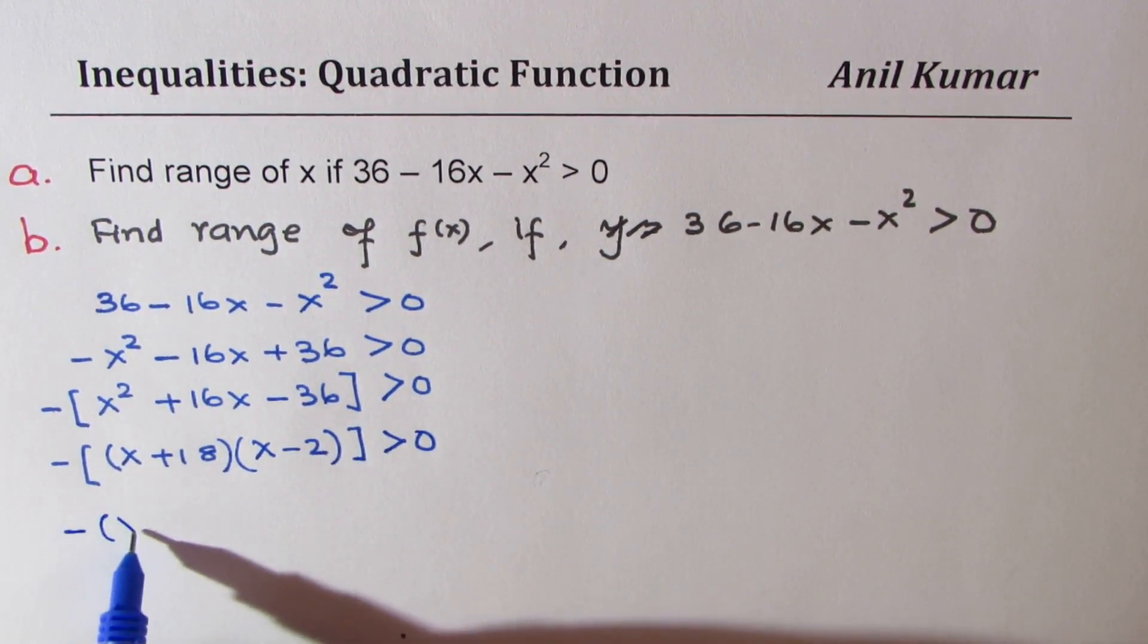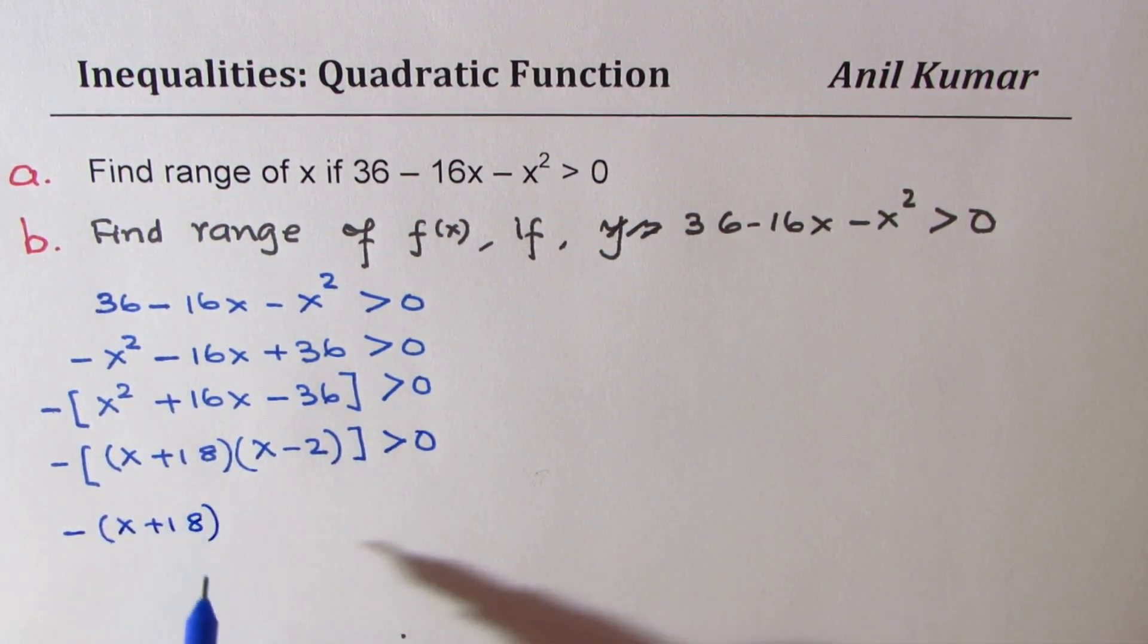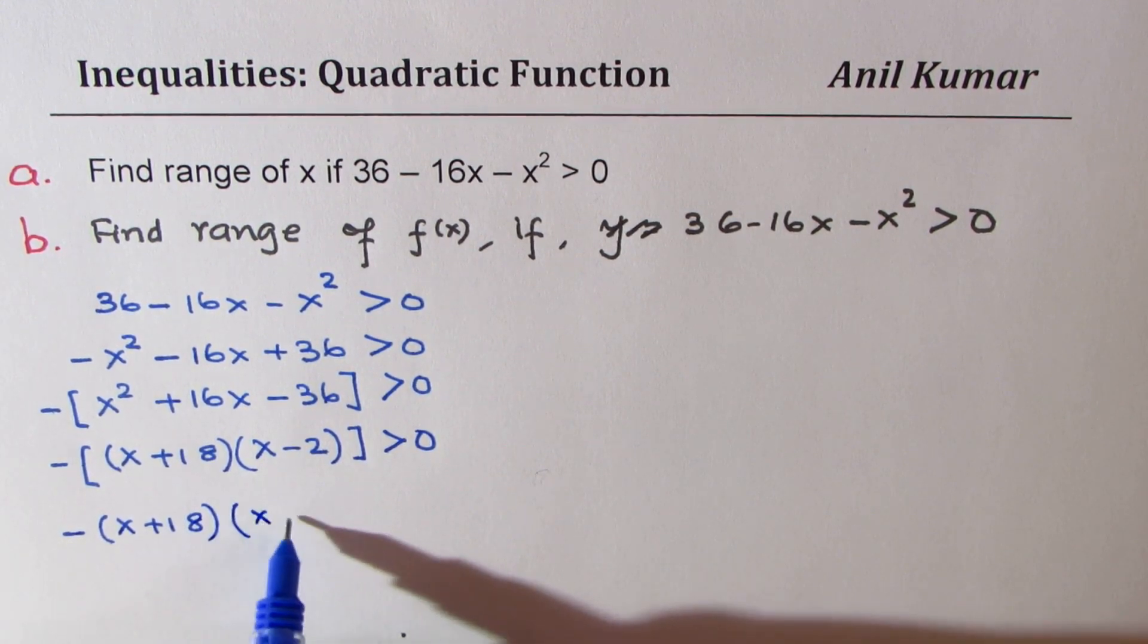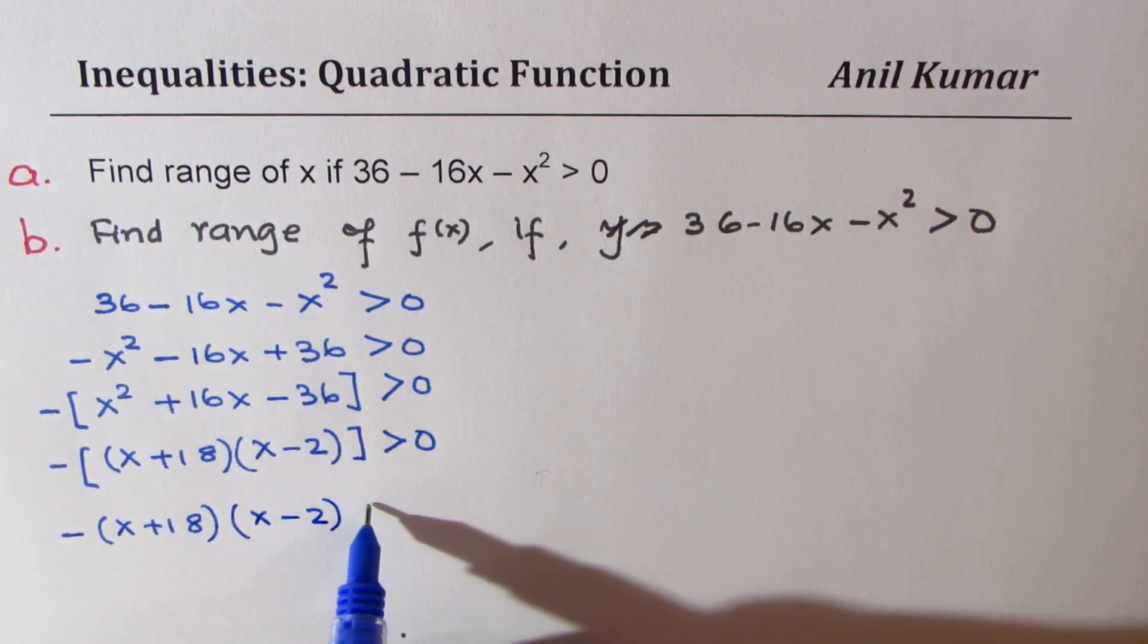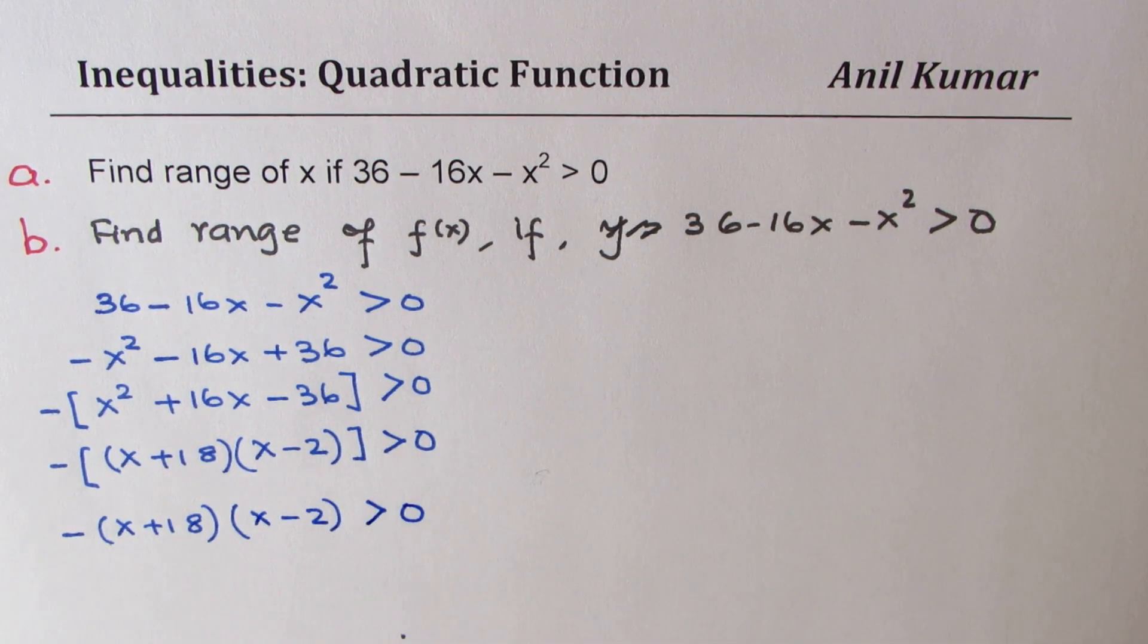Or, we have something like minus (x + 18)(x - 2) is greater than 0. So that's what we get.